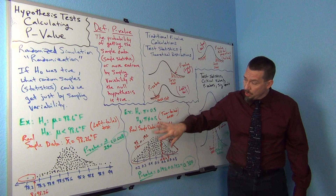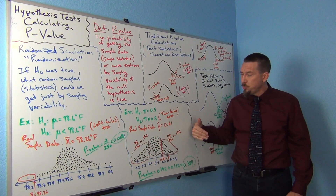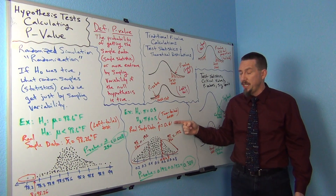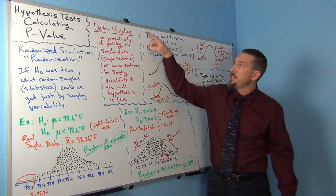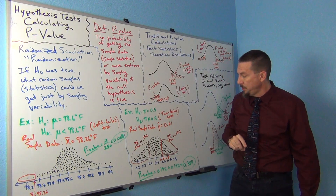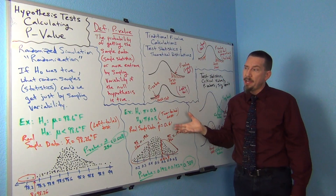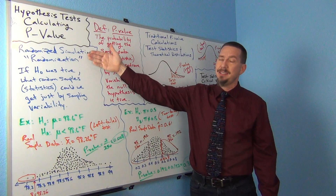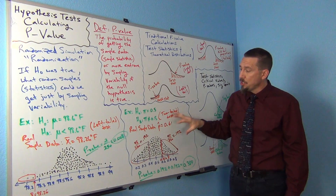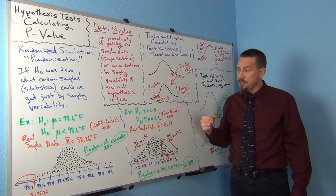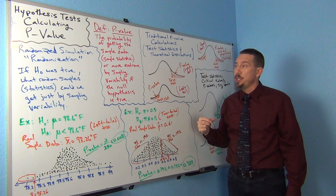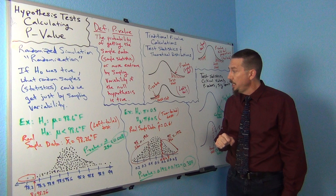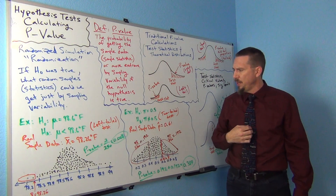Think of all these sample proportions and identify which ones disagree with the null hypothesis even more than the real sample data did. That's really what this definition is telling us. So this is how p-values are calculated theoretically when you're using randomized simulation. In our next video, I'll do some computer work and show you how to use the computer to calculate these simulations. But this is really the direct way of calculating the p-value.